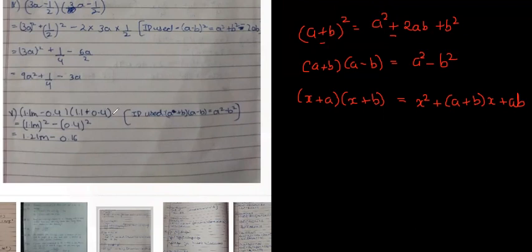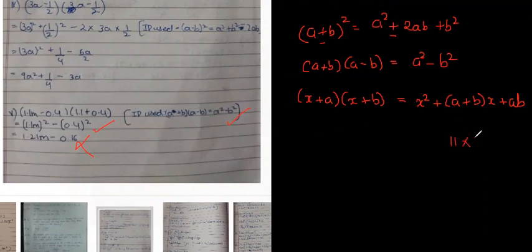Now, (a-b)(a+b) — since a plus b times a minus b equals a² - b², the answer is a² - b². Make sure you do the calculation. This step is incorrect; if I give you this for 2 marks I can only give 1.5. 11×11 = 121, so that is 1.21, and m×m = m². Your answer should be 1.21m² - 0.16.